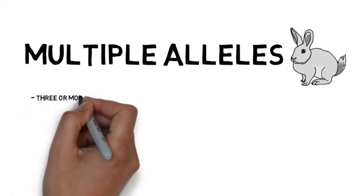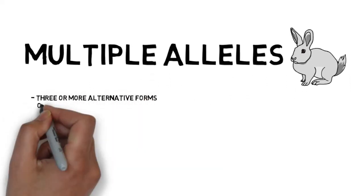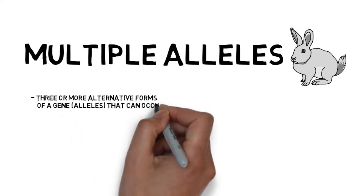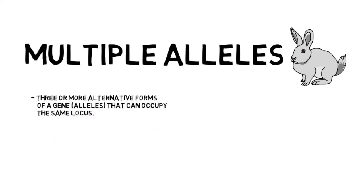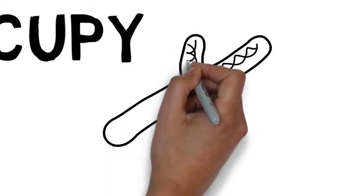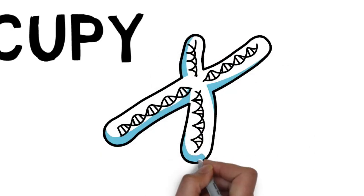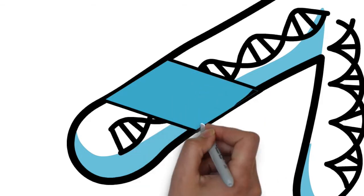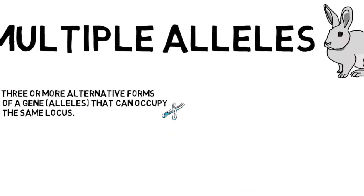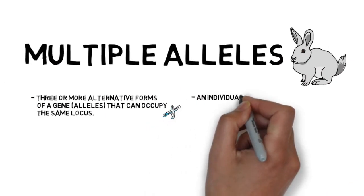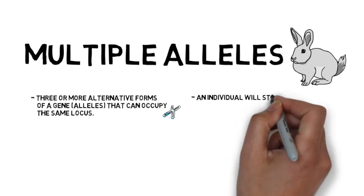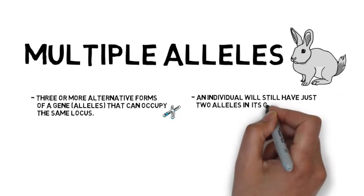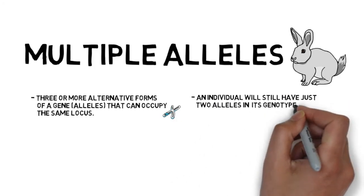Multiple alleles are three or more alternate forms of a gene that can occupy the same locus. Remember, a locus is a specific, fixed position on a chromosome where a particular gene is located. Even though there are three or more alleles for a certain gene, an individual will still have only two alleles in its genotype.